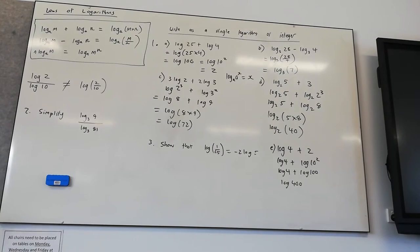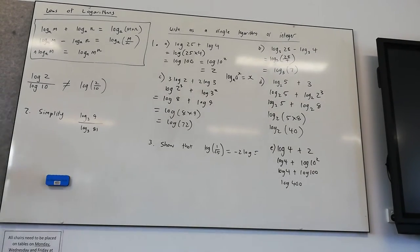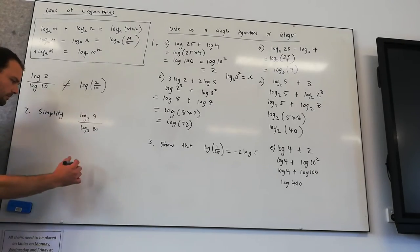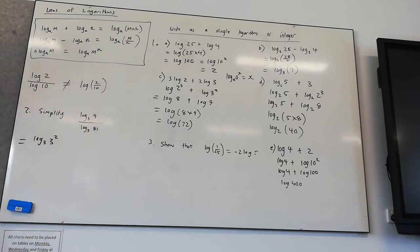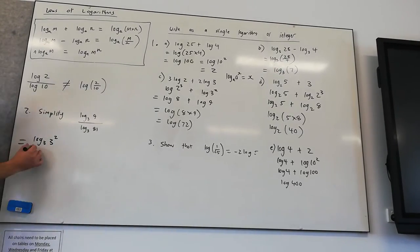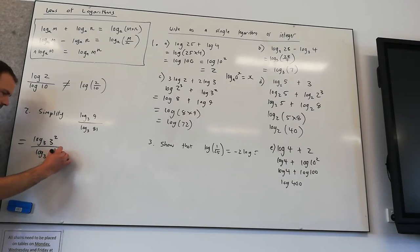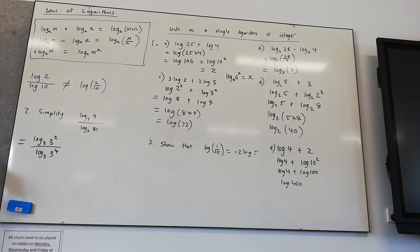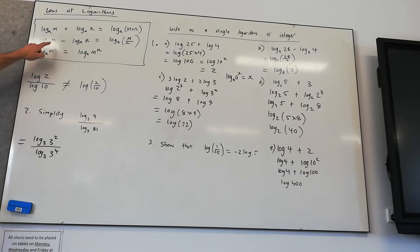We've got simplify log in base 3 to the power of 9 divided by log in base 3 of 81. So what I want to point out to you here is log in base 3 of 9, we can express that as 3 to the power of 2. And log in base 3 of 81, we can express as 3 to the power of 4. Then, using this rule here, we can move the power out the front.